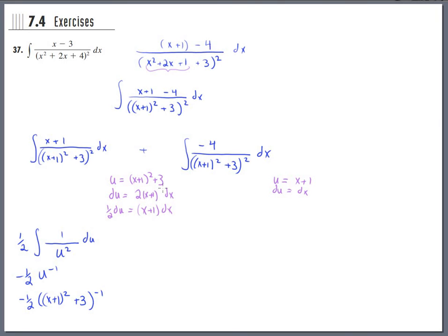So after integrating, negative one half u to the negative 1. And u gets replaced with this stuff, so this half becomes negative one half times x plus 1 squared plus 3, all that to the negative 1. And we are done with half of the integral. For the second one, I tried a little u-substitution also, and it turned out to not be the final answer, but it helped a little bit.